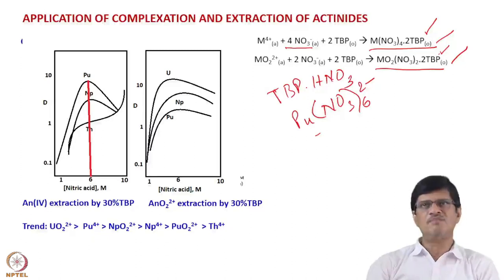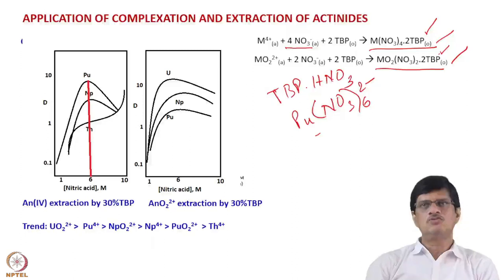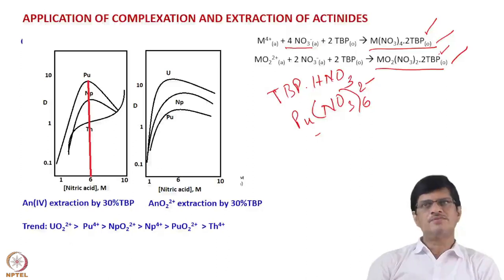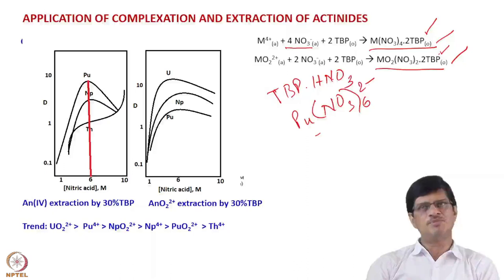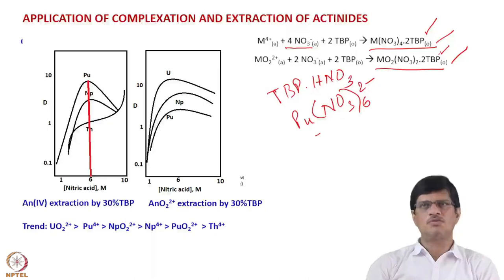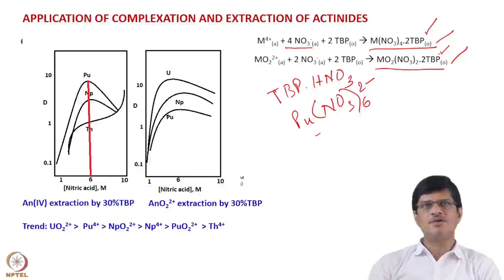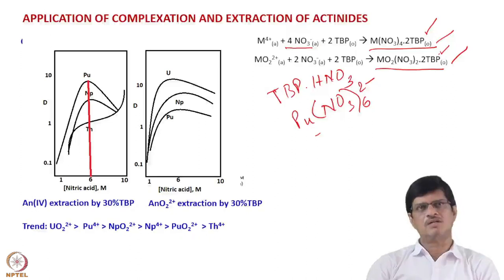For the tetravalent metal ion we have four nitrates, so the nitrate ions are more favorably partitioned into the aqueous phase. That is why the M(NO3)4·2TBP species partitions less into the organic phase compared to the MO2(NO3)2·2TBP species. This is the reason why uranium(VI) extraction is higher than that of plutonium(IV) extraction.